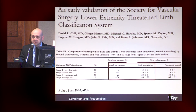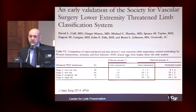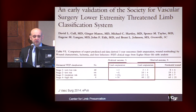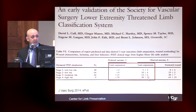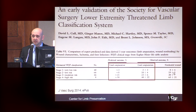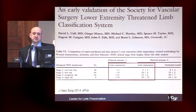In 2014, this system was validated by a group out of South Carolina. They compared actual outcomes at one year versus the predicted outcomes by the WIfI classification system. The percent predicted amputation rate goes up from stage one at three percent to fifty percent at stage four, and their observed limb amputation outcomes correlated closely with the predicted levels. Similarly, for non-healing wounds, as the stages increase, you get less likelihood of healing — which is exactly what they found.